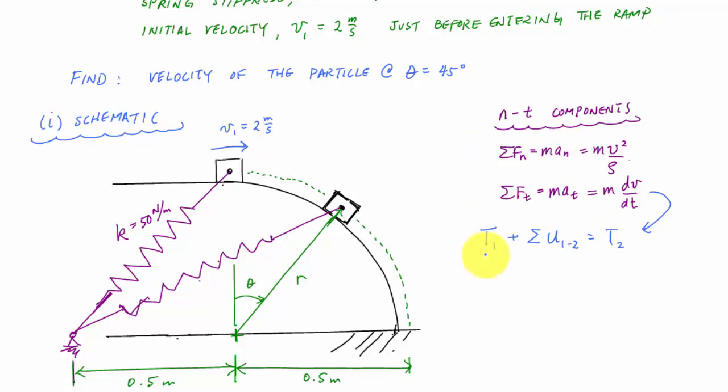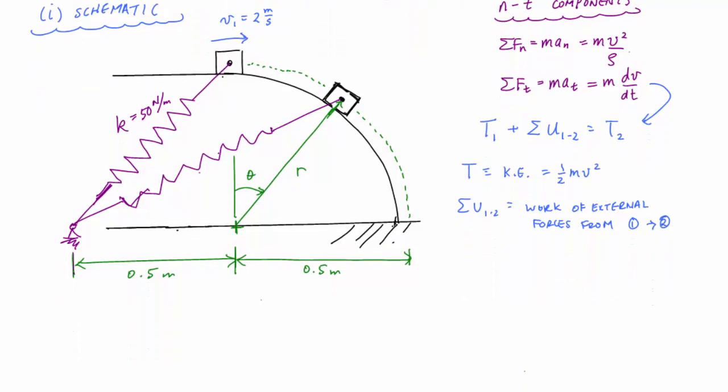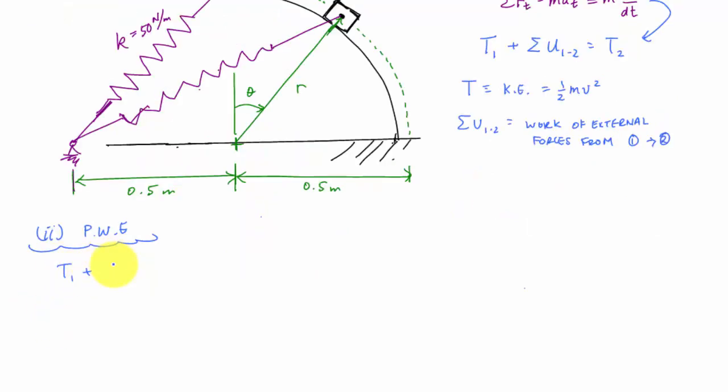Now as a quick recap, this T represents the kinetic energy. It's equal to one half mass times the velocity squared. The sum of U1 to 2 is the work done by external forces going from 1 to 2. Now the way I like to start out these problems is to actually by writing out that principle of work and energy, which I already did once. But I'll do it again anyway, as if I'm solving the problem. T1 plus the sum, the work from 1 to 2 is equal to the kinetic energy at 2.